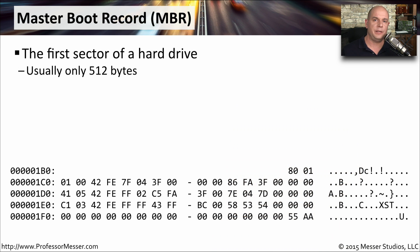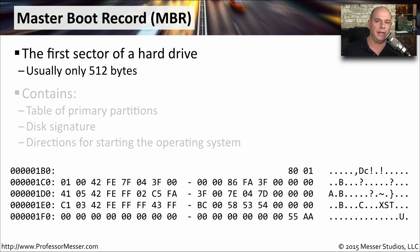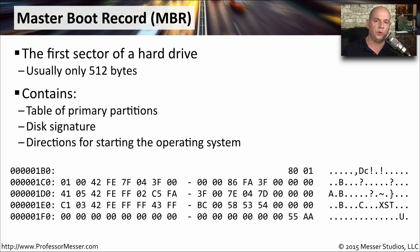With the legacy BIOS, your computer relies on a master boot record, or MBR. This is often the first sector of the very first hard drive. It's very small — only 512 bytes in length — and it stores important information about where partitions might be on this drive.